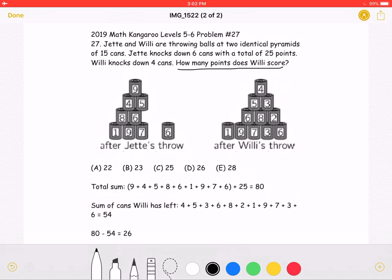We can do this by first finding the total sum of the cans. If we add up all the cans Jet has left after his throw, 9 plus 4 plus 5 plus 8 plus 6 plus 1 plus 9 plus 7 plus 6,